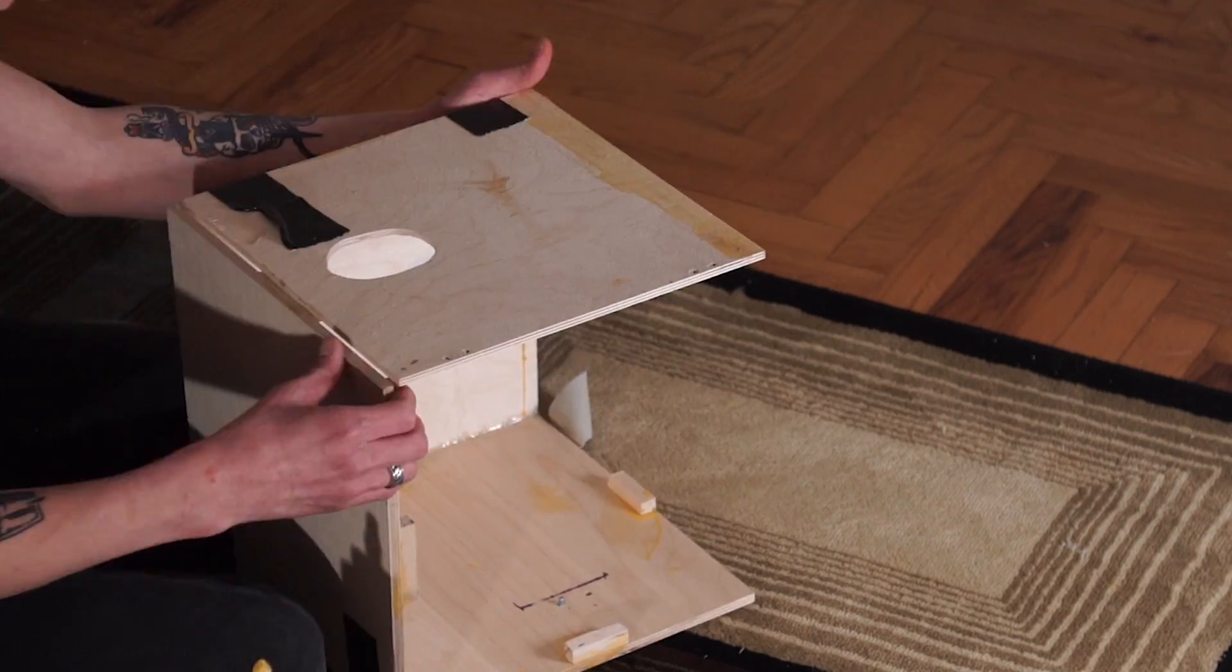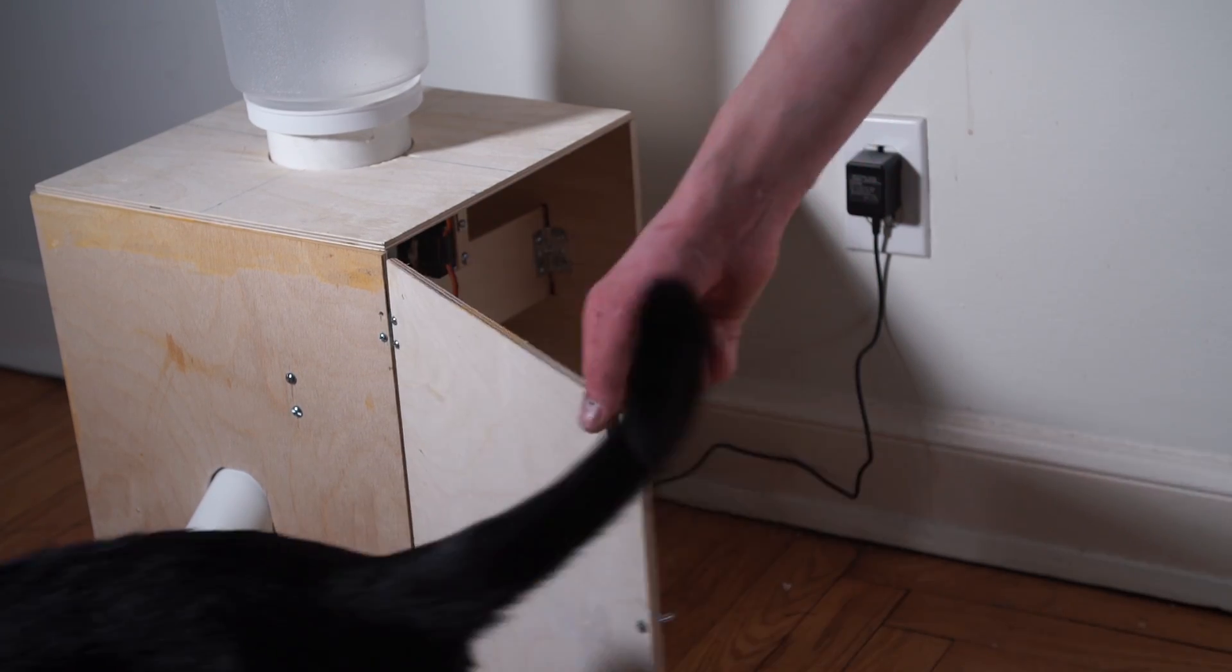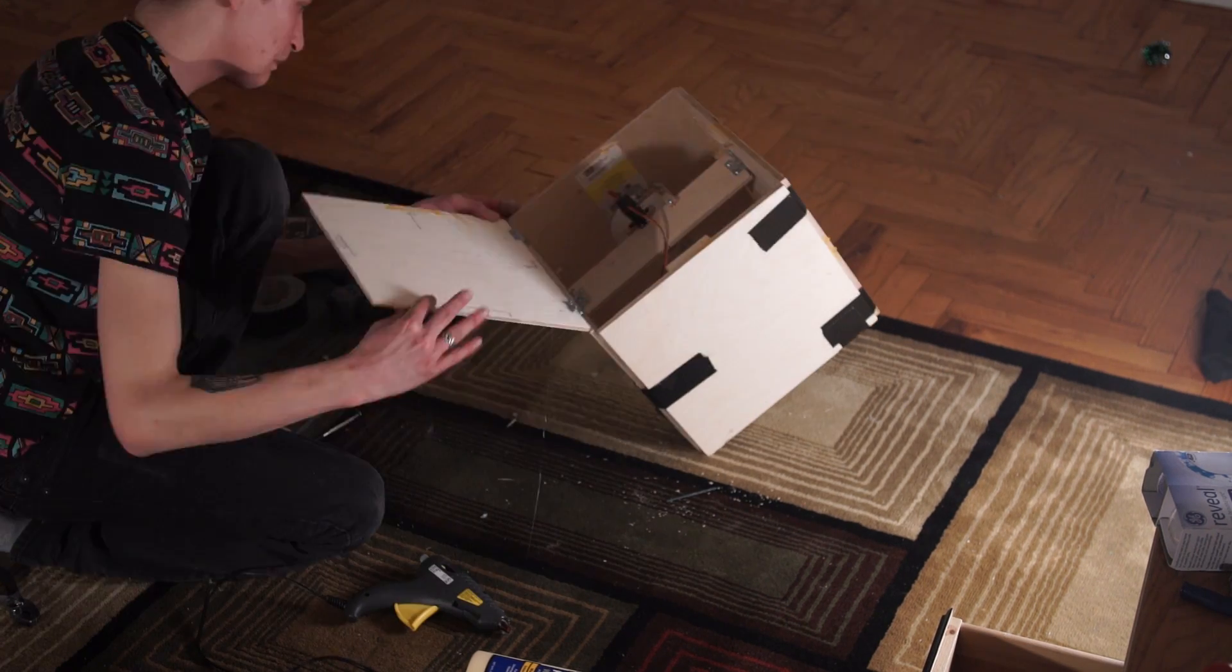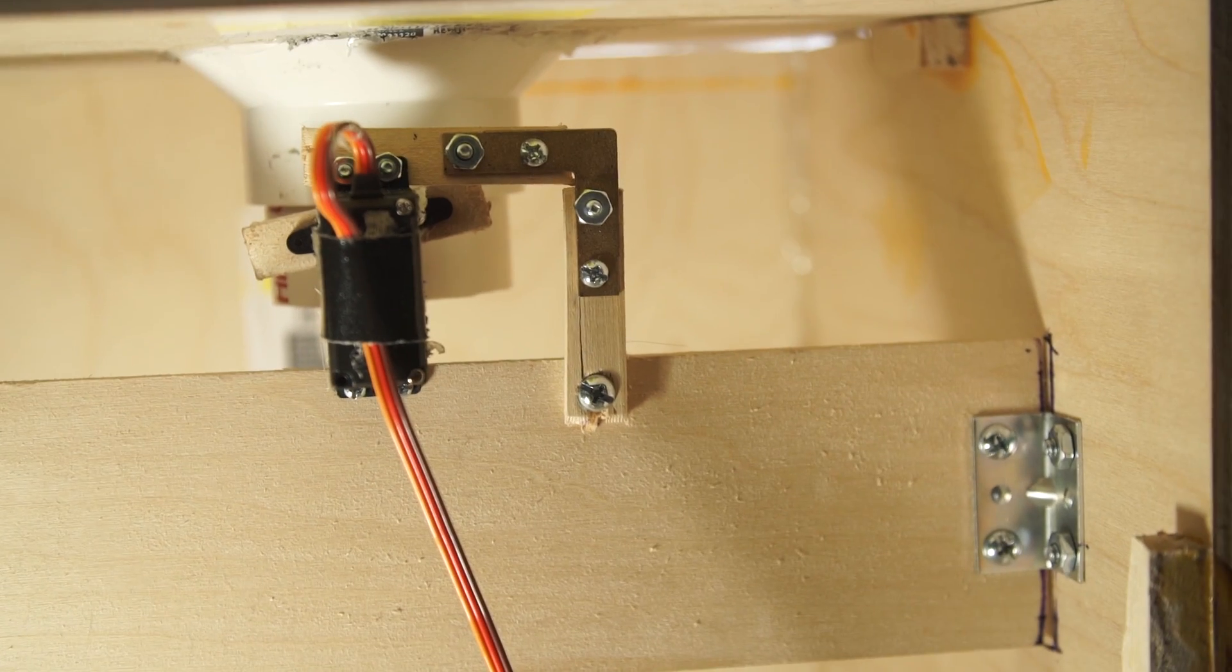I added hinges to one side of the box so that it could easily be opened so I could adjust the electronics or fiddle with the PVC. Next I assembled the PVC section inside the box and epoxied the pieces to the wood. Then I mounted the servo in place using wood, L brackets, and nuts and bolts.